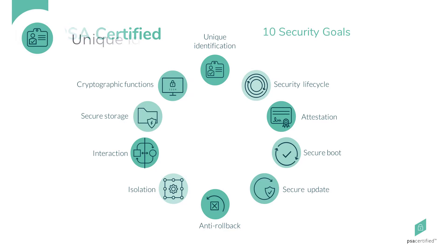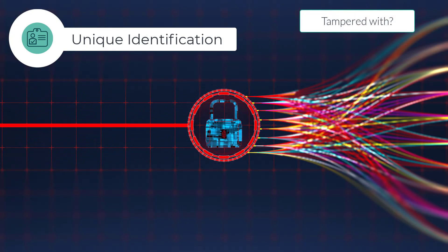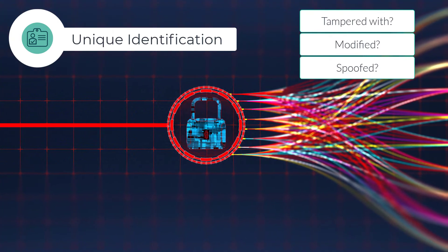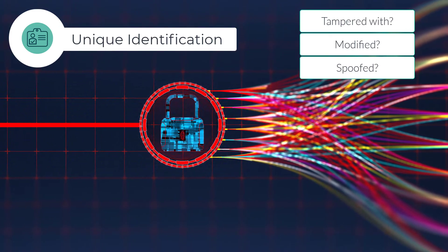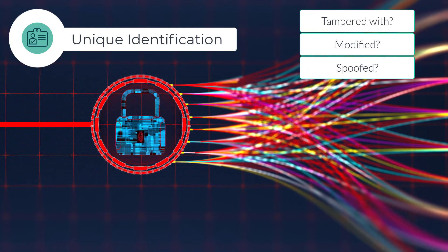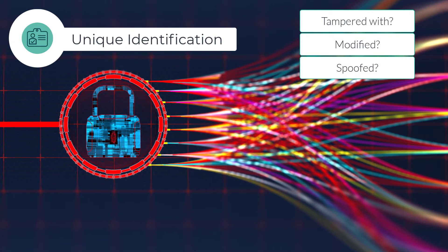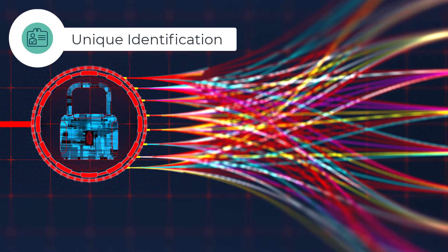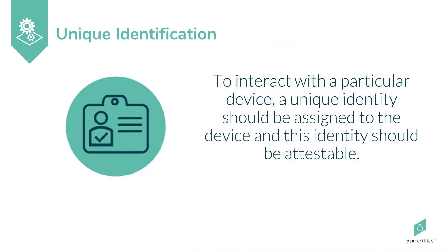A user and the cloud both need to be able to trust a device. They need to know that the device hasn't been tampered with, that an attacker has not modified it, and when accessing the device remotely, that something else isn't spoofing or pretending to be that device. A device needs to cryptographically authenticate itself and its code and data as it boots, and the cloud and the user need to be able to authenticate the device. For a user or cloud to interact with a particular device, it needs to have been assigned a unique identity, and this identity should be attestable. That attestation is then verifiable as a means of proving the device's identity, facilitating trusted interaction such as exchanging data and managing the device. Developers can build a unique identifier in each device, such as a serial number or key.